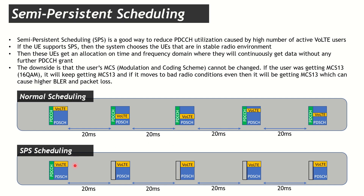With SPS, the user keeps getting the same modulation every time because there is no PDCCH to change it. If the user is in good conditions and gets 16QAM, it will keep getting 16QAM. But if it moves into bad coverage, it will still get 16QAM and may not be able to decode it — it needs the more robust QPSK modulation. So SPS is not reactive; it is too slow to react to channel changes. That is one of the key drawbacks of using SPS.